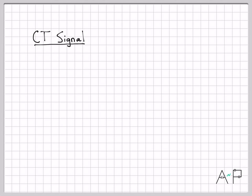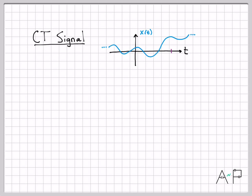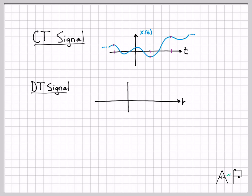Let's draw some cartoons to get a better feel for this. A continuous time (CT) signal is always plotted versus the continuous variable t. Here is a sketch of what a continuous time signal x(t) might look like. No matter where I pick on the time axis, the signal has a value — it's defined because it is a continuous time signal.